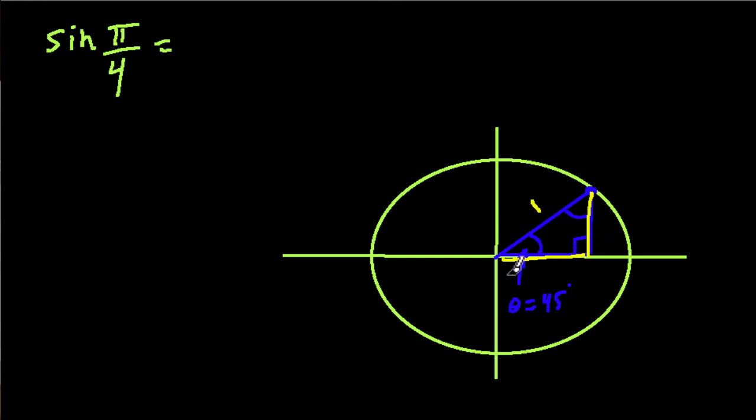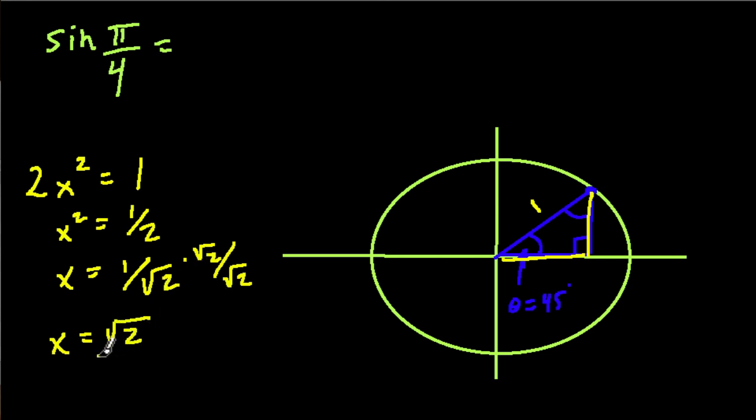We know our hypotenuse is 1. If these two legs are equal, we can use the Pythagorean theorem to figure out what they are. They're both x, so x squared plus another x squared, two legs is 2x squared, equals the hypotenuse squared which is 1. Divide both sides by 2, and we get x squared equals 1 half. Take the square root of both sides, and x equals 1 over the square root of 2.